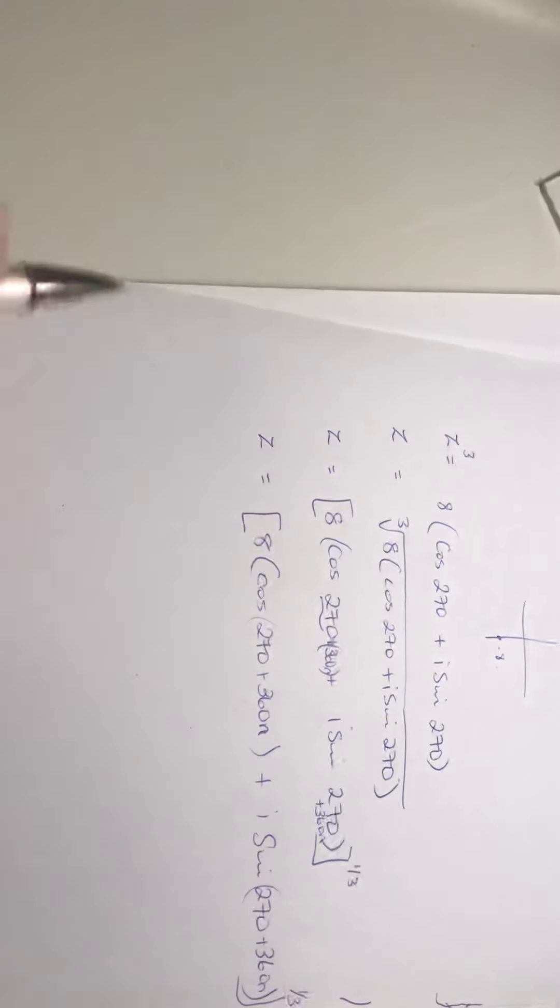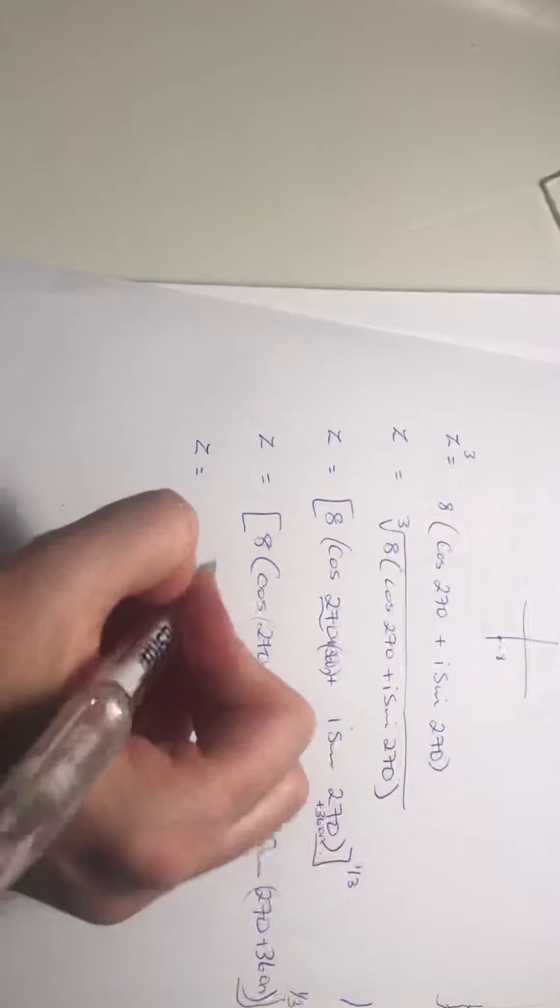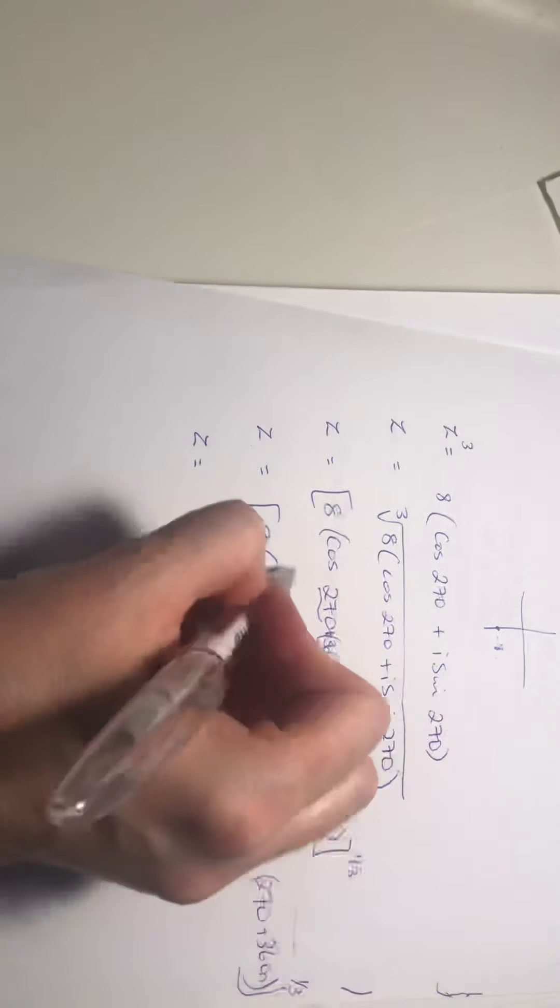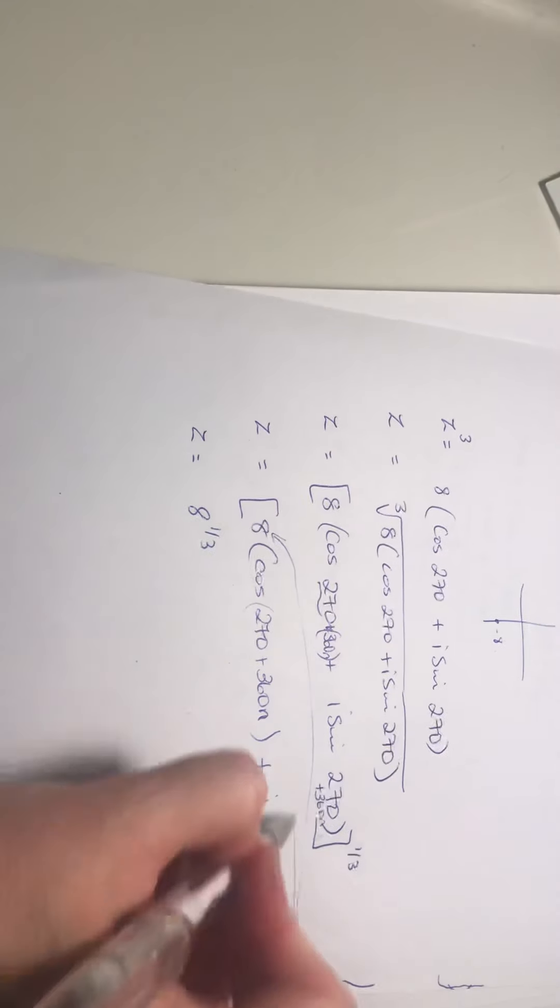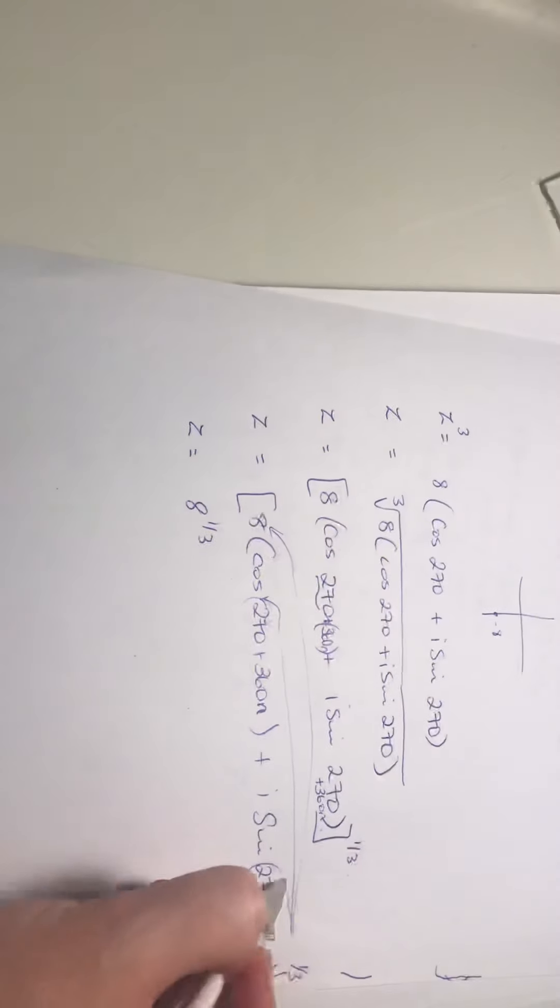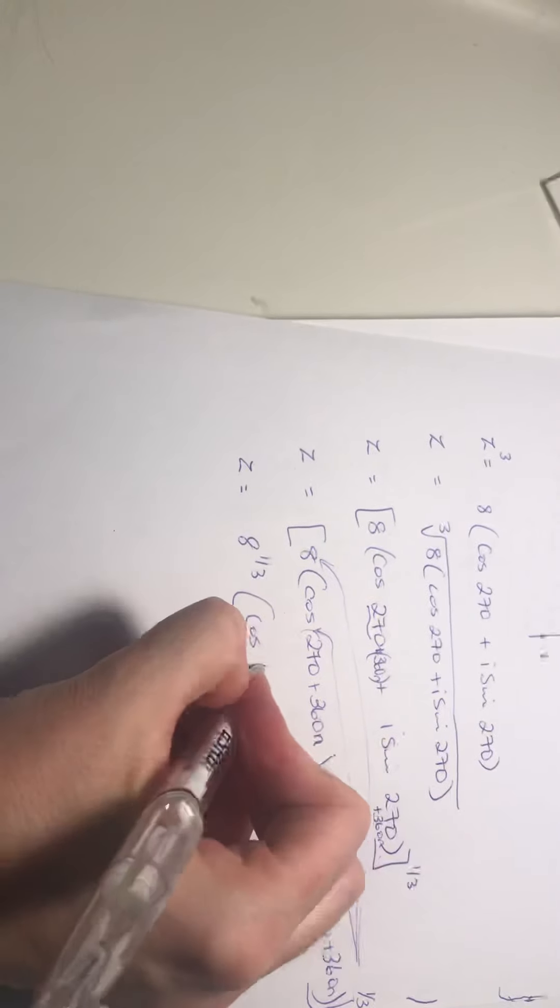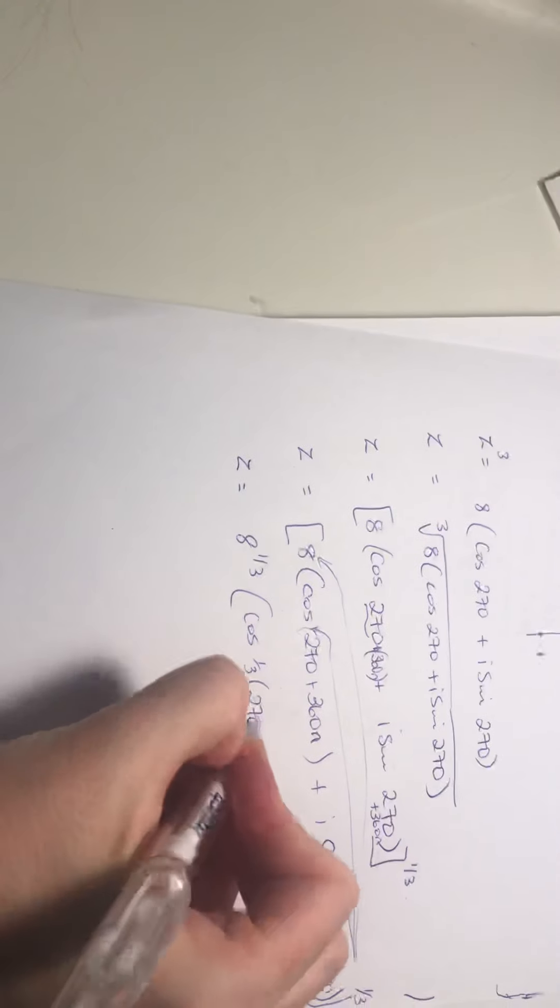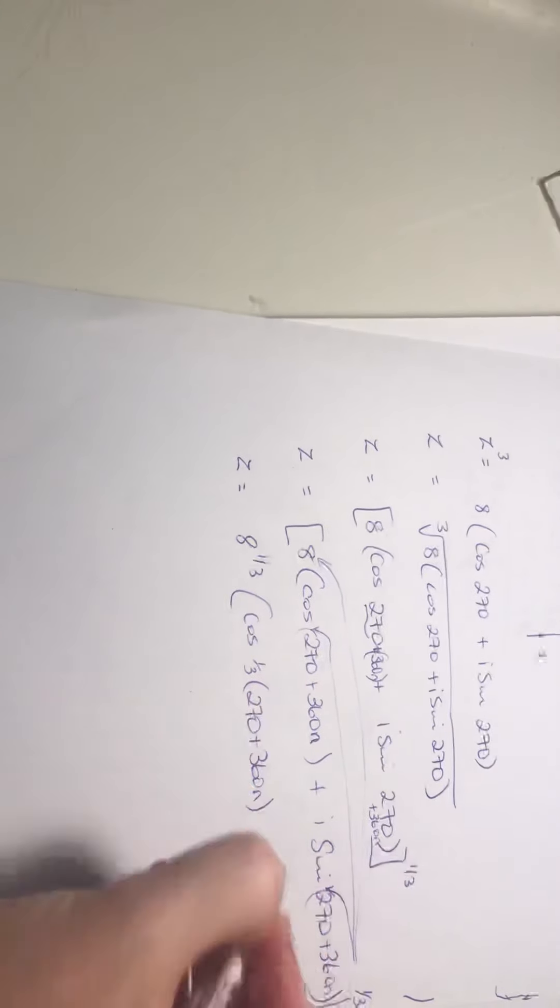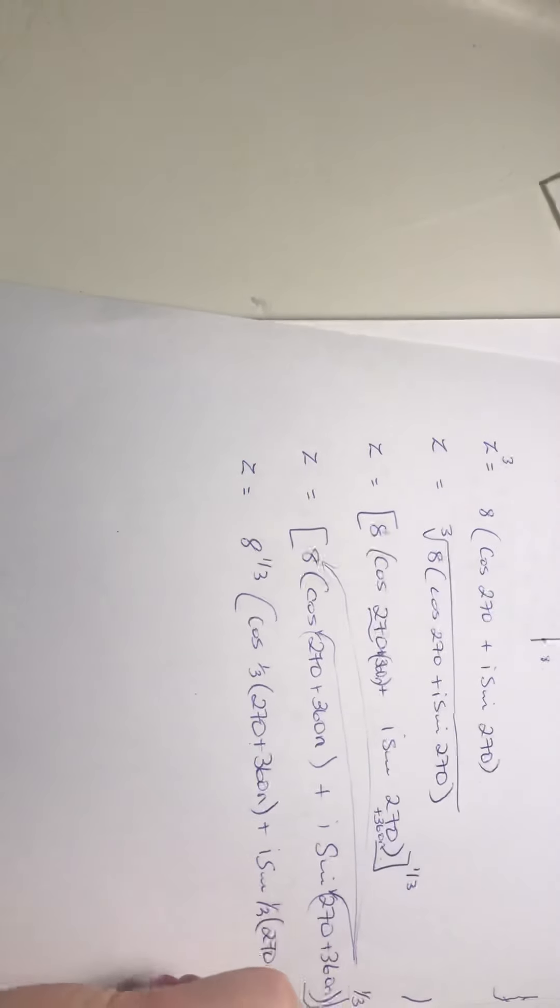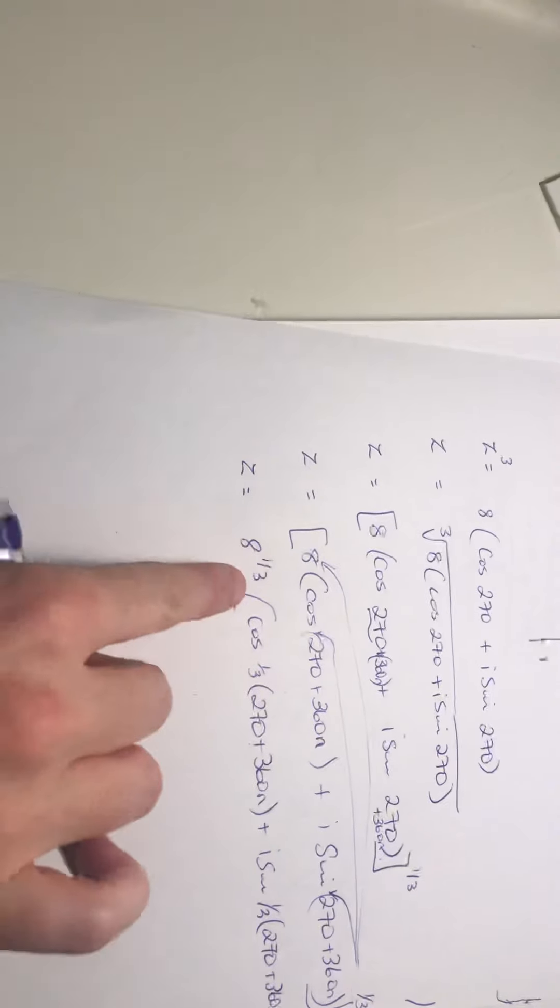So if I didn't do that step, I'd end up just with one solution which I'm looking for three from the start. Now, if you were working in radians, it wouldn't be plus 360n, it would be plus 2π n. Now apply De Moivre's theorem. Z is equal to 8 to the power of a third. You bring the power here on top of that and here down in front of your angles. So that's cos of a third times the 270 plus 360n plus i sine a third of 270 plus 360n.